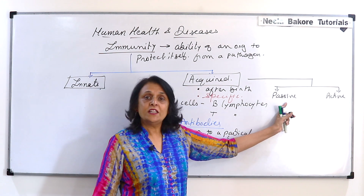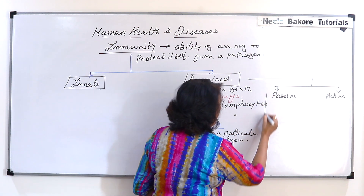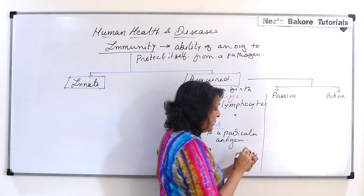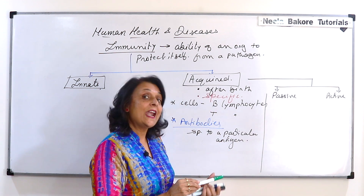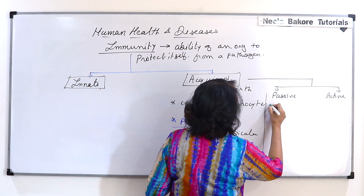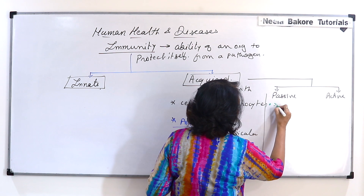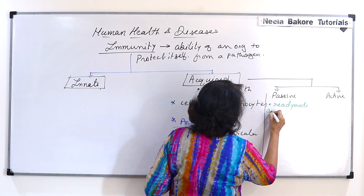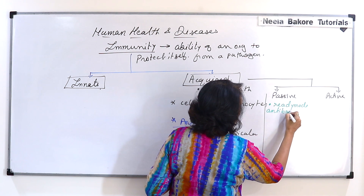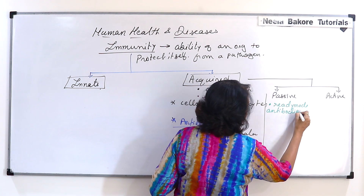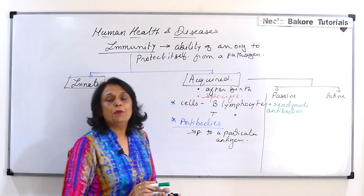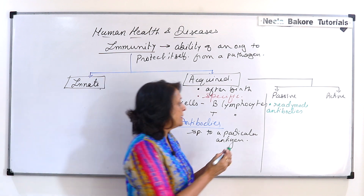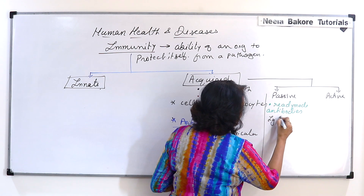So what is passive acquired immunity? That means we get ready-made antibodies. There are two which we naturally get. One is IgG.